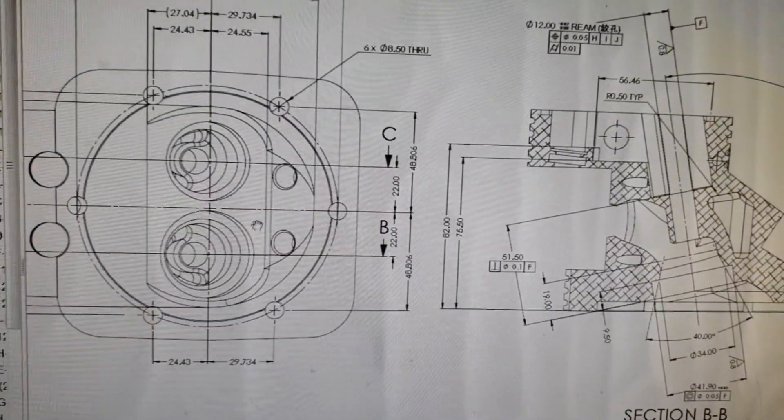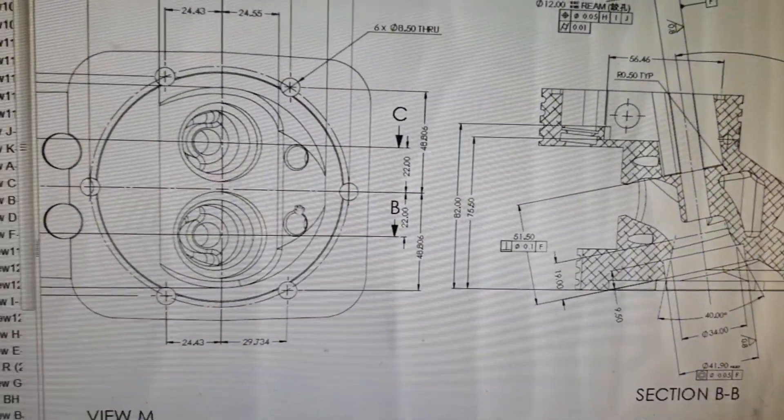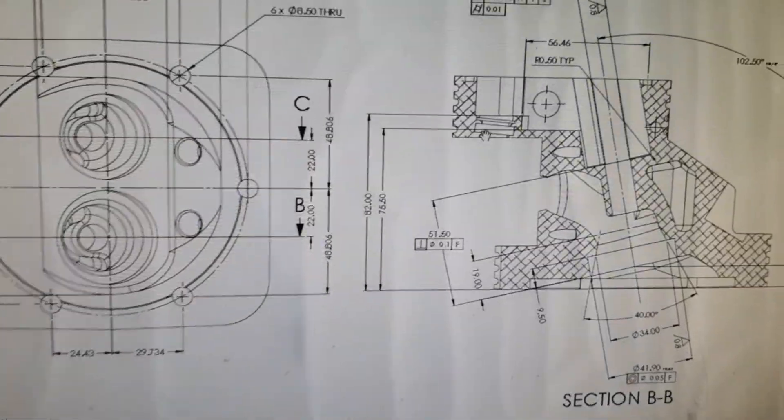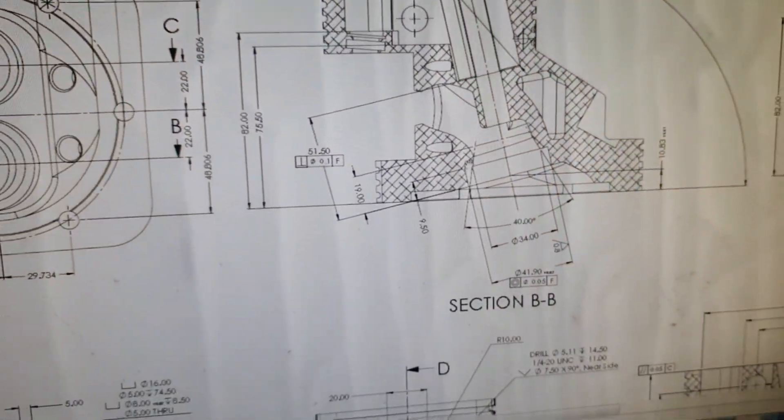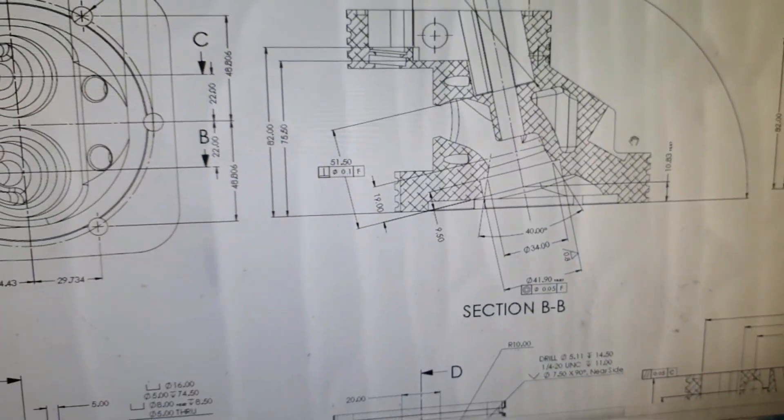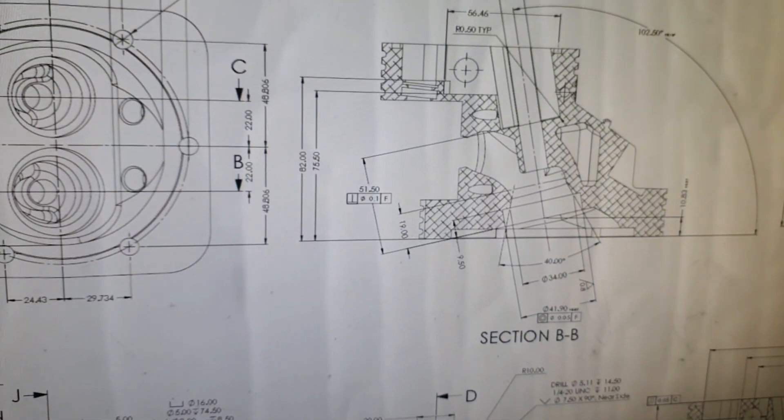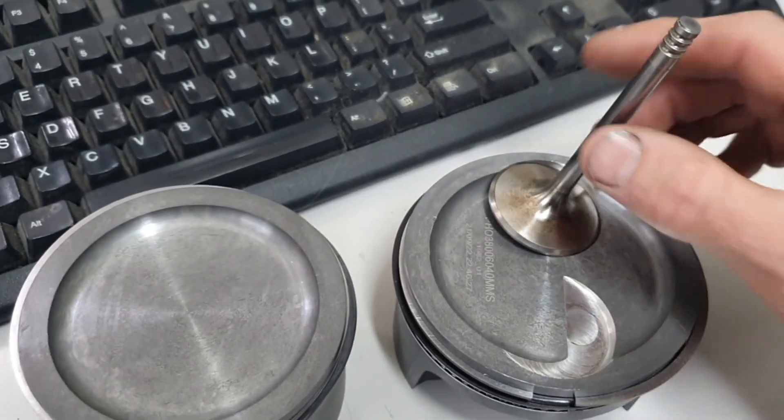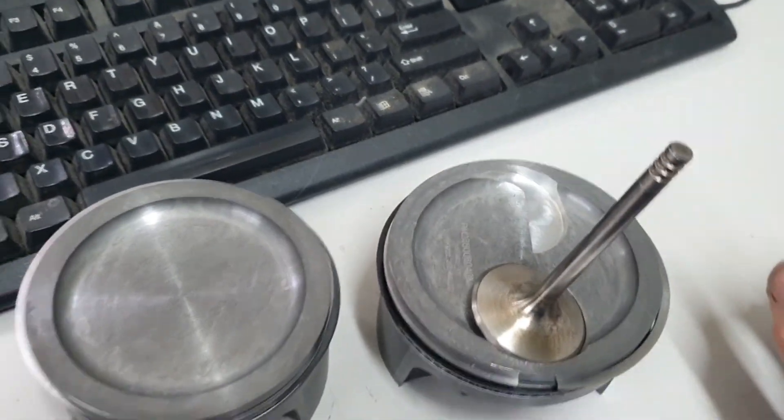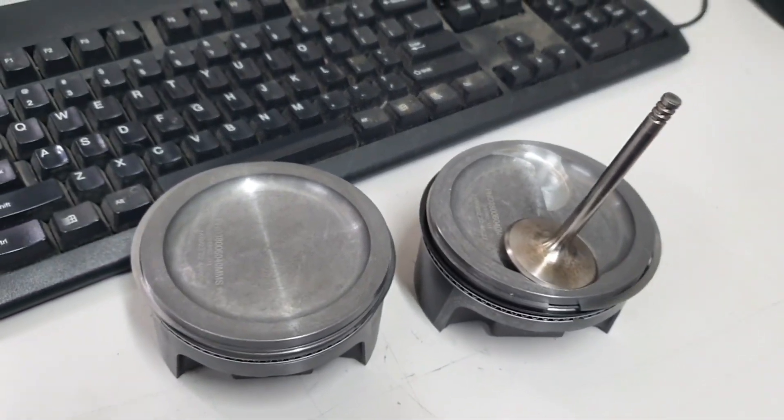But we respected all of the center distances of the valves, the push rod tubes, the O-rings in this area here for the push rods, literally all the details are the same, including the valve inclination. So that made it easy for me to find it exactly where these valves want to sit like that, you see? Anyway, so let's pop out to the machine and take a look at what we're doing out there.